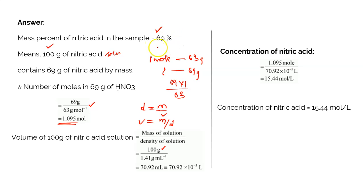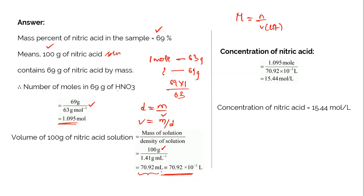The total mass of the solution is 100 grams — identified from the 69% mass percentage — divided by density which is 1.41. Substituting and simplifying, we get 70.92 into 10 power minus 3 liters. Always remember: in the formula of molarity, volume is taken in liters. So once you substitute the number of moles and volume into the molarity formula and simplify, the final answer is 15.44 moles per liter.